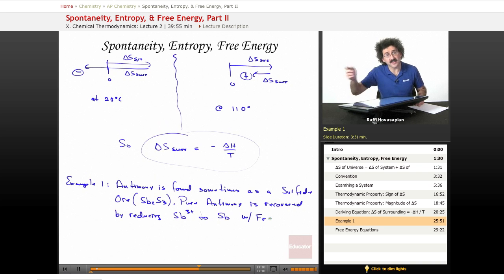Iron gets oxidized and becomes iron sulfide. Here's the reaction: Sb2S3 plus three moles of iron atoms produces two moles of pure antimony metal plus iron two sulfide, FeS.